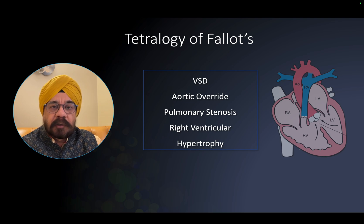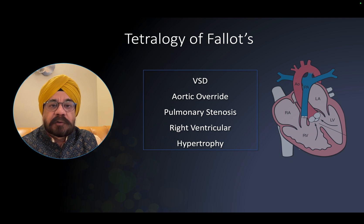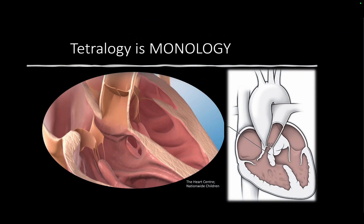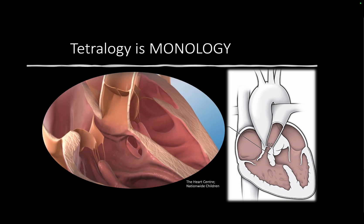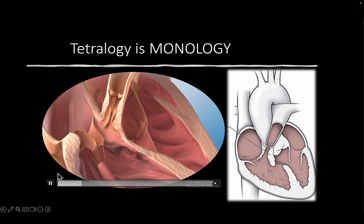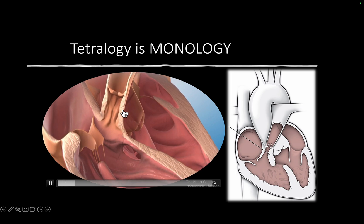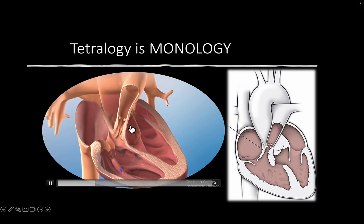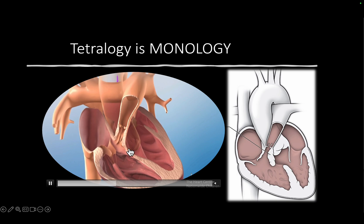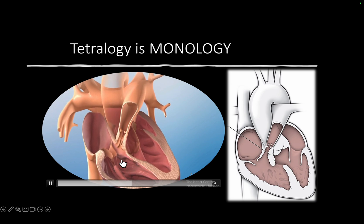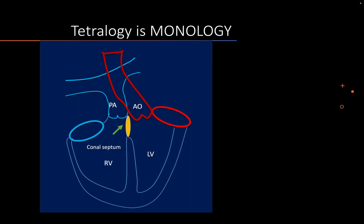Before I tell you the parameters of severity, the basics: there are four components, that's why it's called tetralogy. Component one is a VSD causing an aortic override - that's number two. Number three is right ventricular hypertrophy, which we see in a neonate or adult but not in a fetal heart. And then pulmonary stenosis. Now the whole thing is the conal septum shift towards the right side causing the aorta to override the ventricular septal defect.